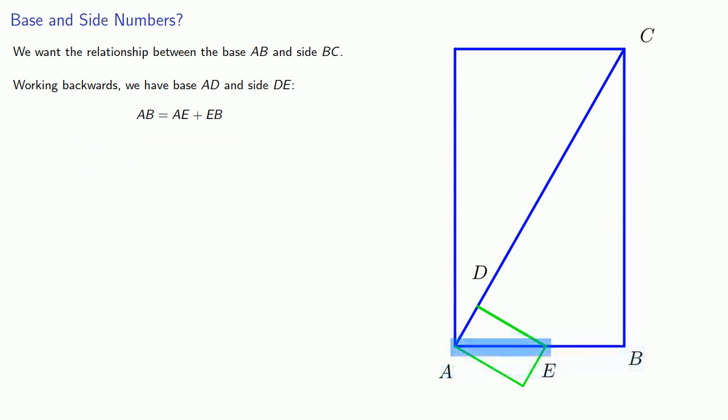And since our diagonal AE is twice the base AD, that means AB, the new base, is 2AD, and EB and DE are equal. So I can replace EB with DE. And so our new base is 2AD + DE. That's 2 times the old base plus the old side.